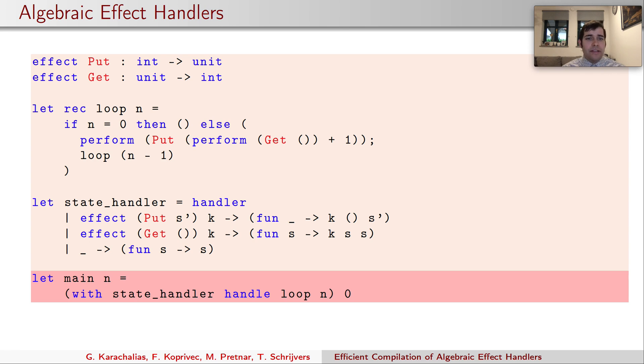Note that this is a very simple example and does not show the full power of handlers. The continuation k behaves as a normal function inside the handler and can be thus invoked zero, once or even many times, thus modifying the control flow in a variety of ways.